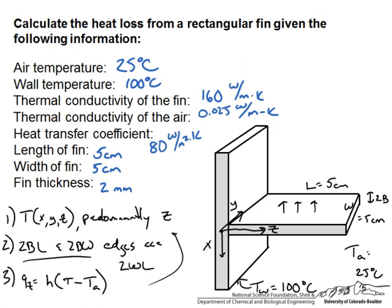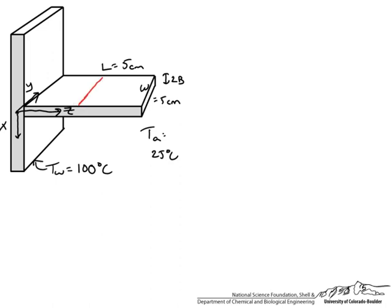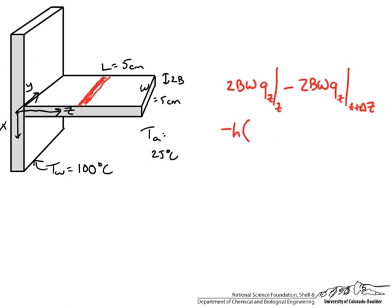We take a small shell of length delta-z and perform an energy balance. The heat flux q_z times area 2bw enters, and the same flux exits at z + delta-z. We must account for heat losses on the face to the air via Newton's law: h times area 2w·delta-z times (T − T_air), all equal to zero. Dividing all terms by 2bw·delta-z and taking the limit as delta-z approaches zero gives us a first-order differential of heat flux in z with respect to z.